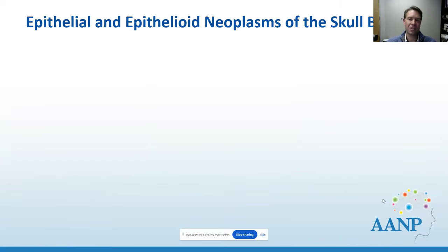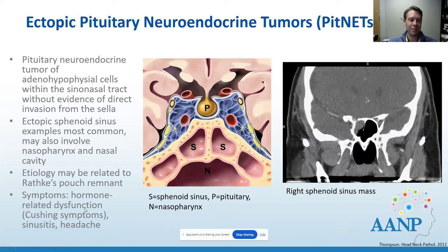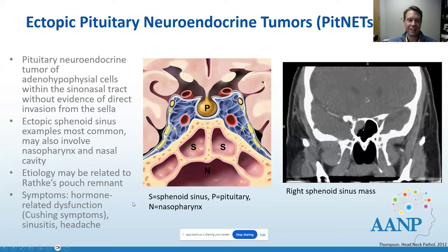Moving to epithelioid neoplasms of the skull base: pituitary neuroendocrine tumors (PitNETs) can occur in the sinonasal tract without direct extension from the sella, most commonly in the sphenoid sinus, possibly related to Rathke's pouch remnants. Symptoms include hormone dysfunction, sinusitis, and headache. From a neuropathology perspective, these are classified the same way as if arising in the sella, but we need to pay special attention to make sure it's not a mimic — such as a well-differentiated neuroendocrine tumor, paraganglioma, or olfactory neuroblastoma. Hormonal markers and lineage markers like SF1 are helpful, and resection can be difficult, leading to local recurrence.